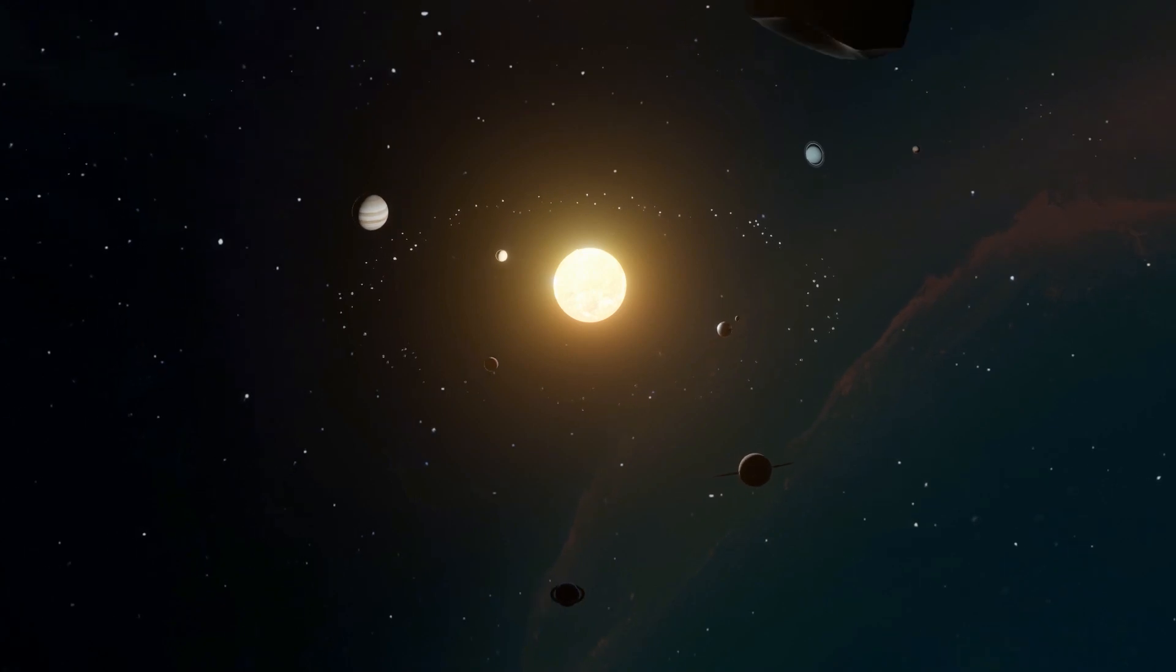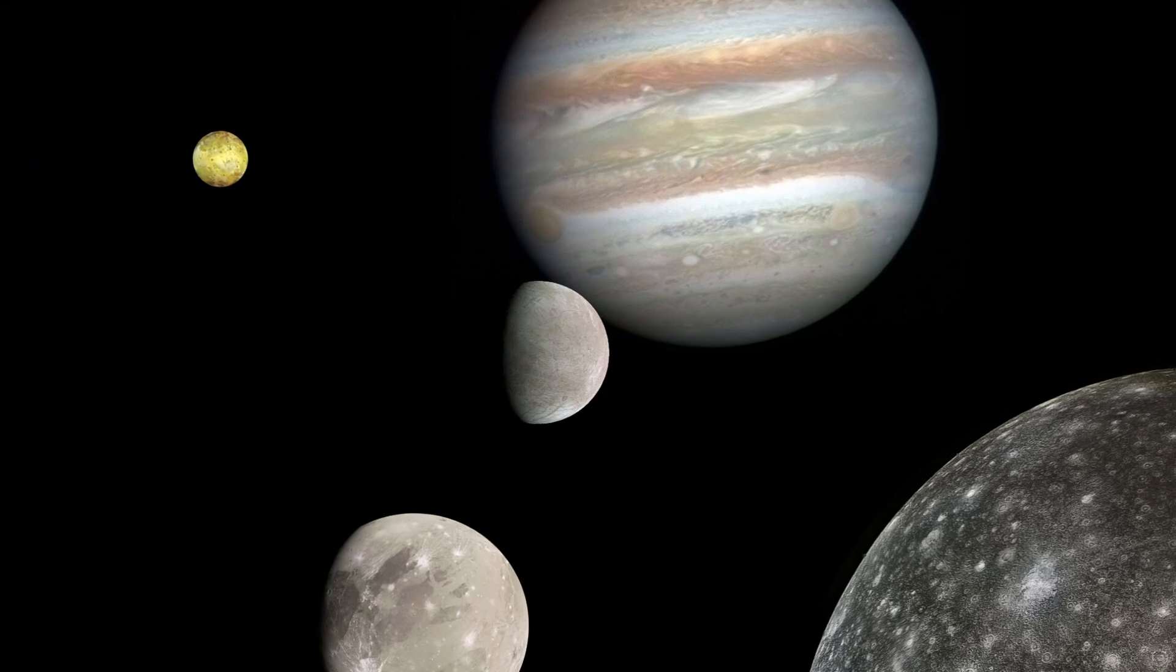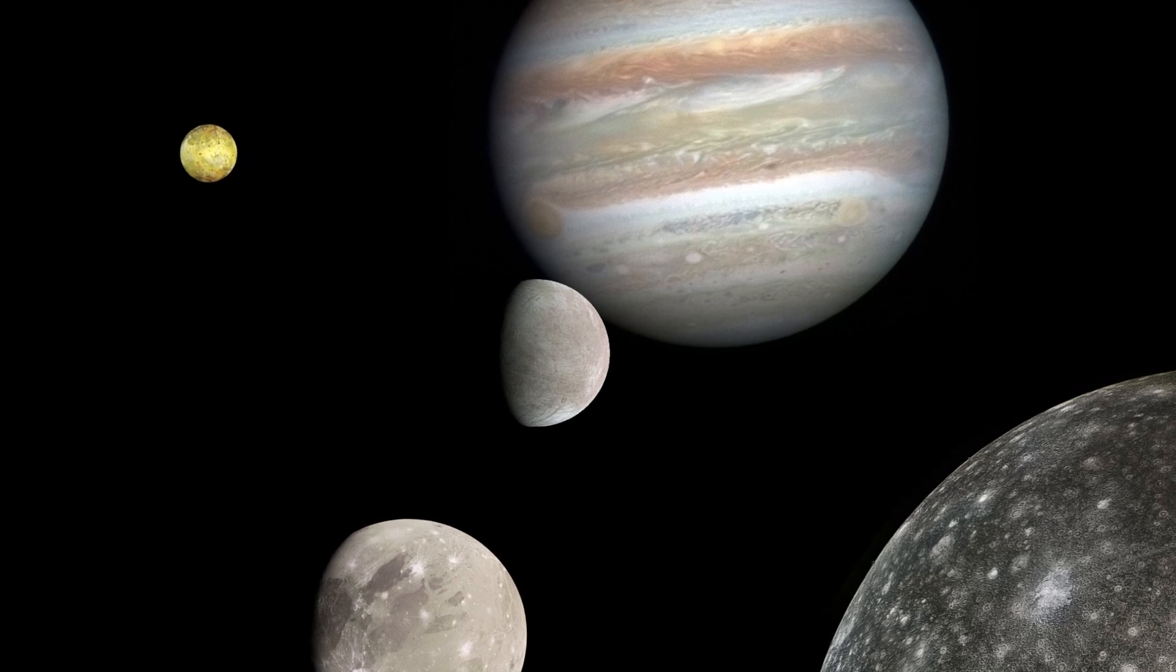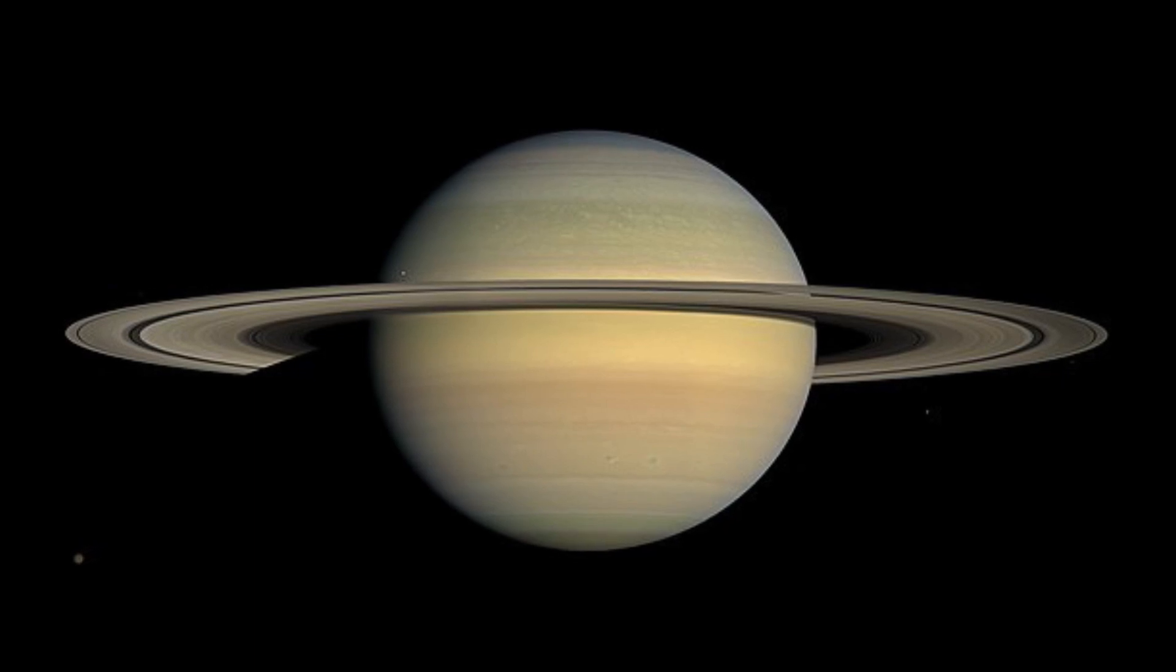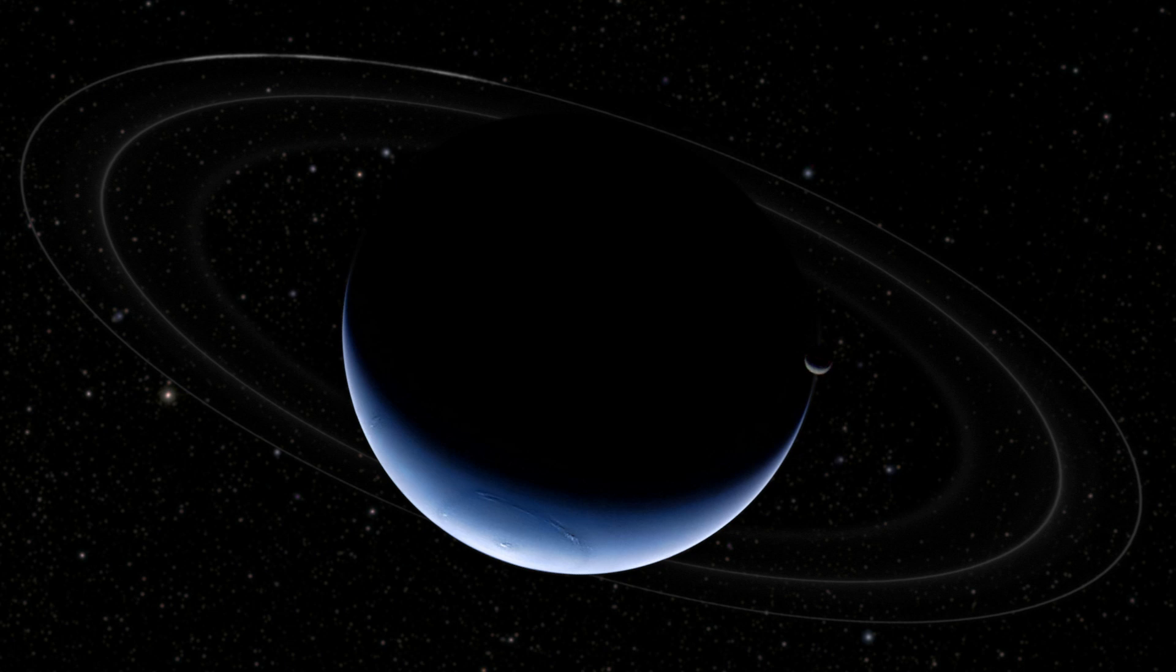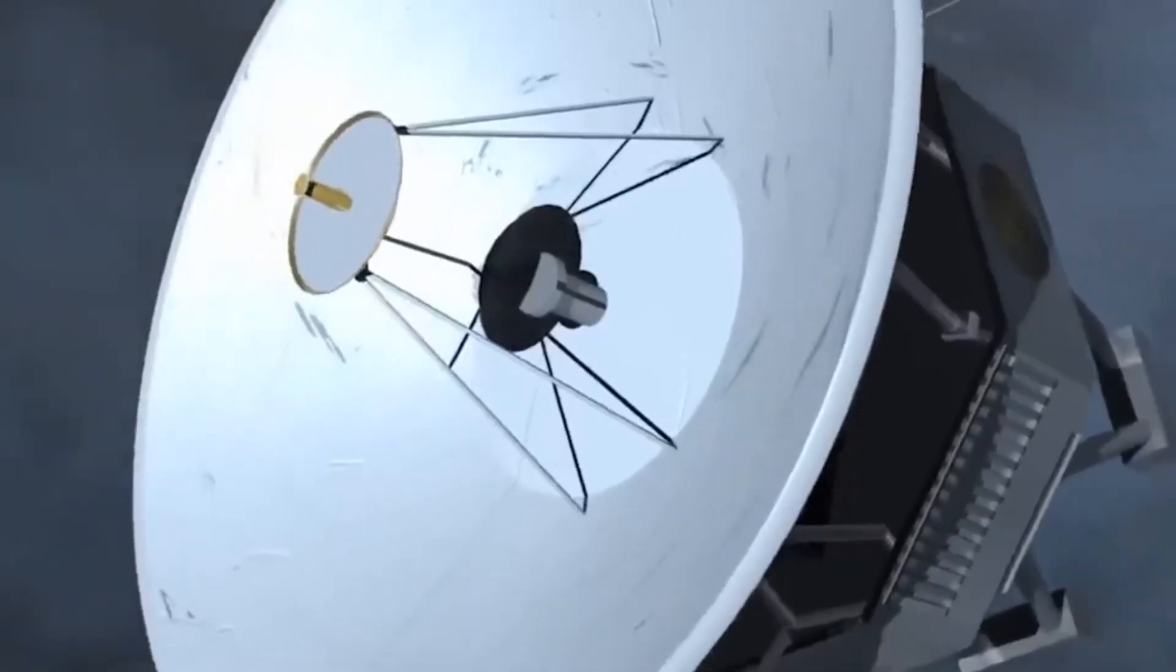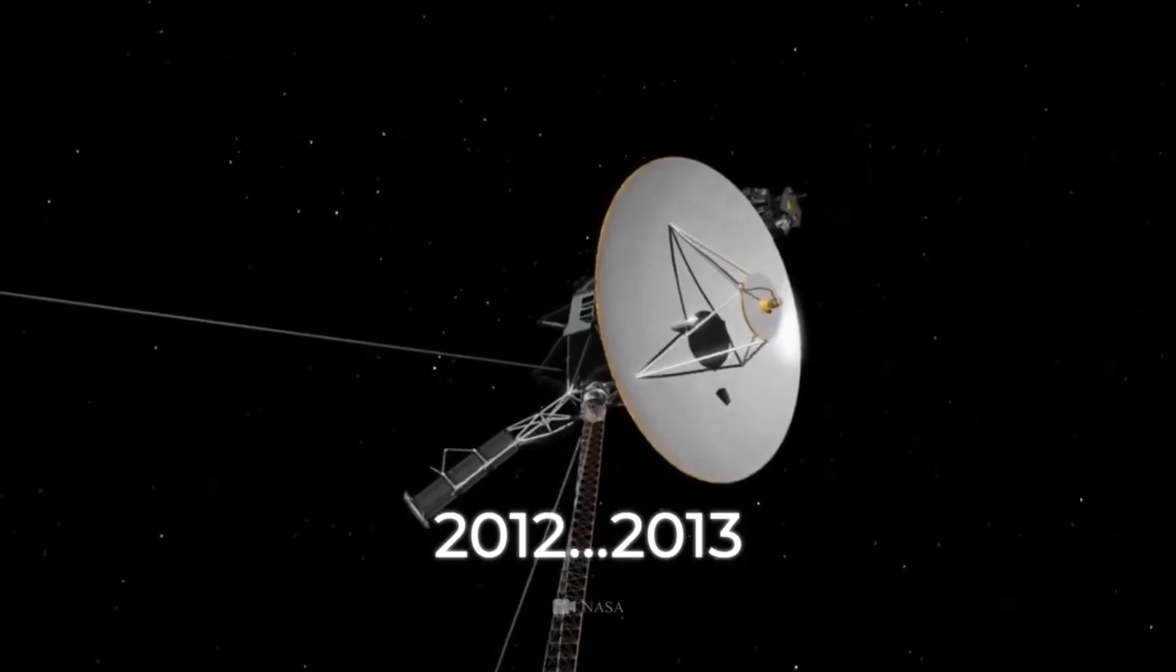The only spacecraft to have visited either of the ice giant planets is Voyager 2. It was the fourth of five spacecraft to achieve solar escape velocity. The primary objective of traveling to the Jovian system in 1979, the Saturn system in 1981, the Uranian system in 1983-1986, and the Neptunian system in 1989 was successfully completed.